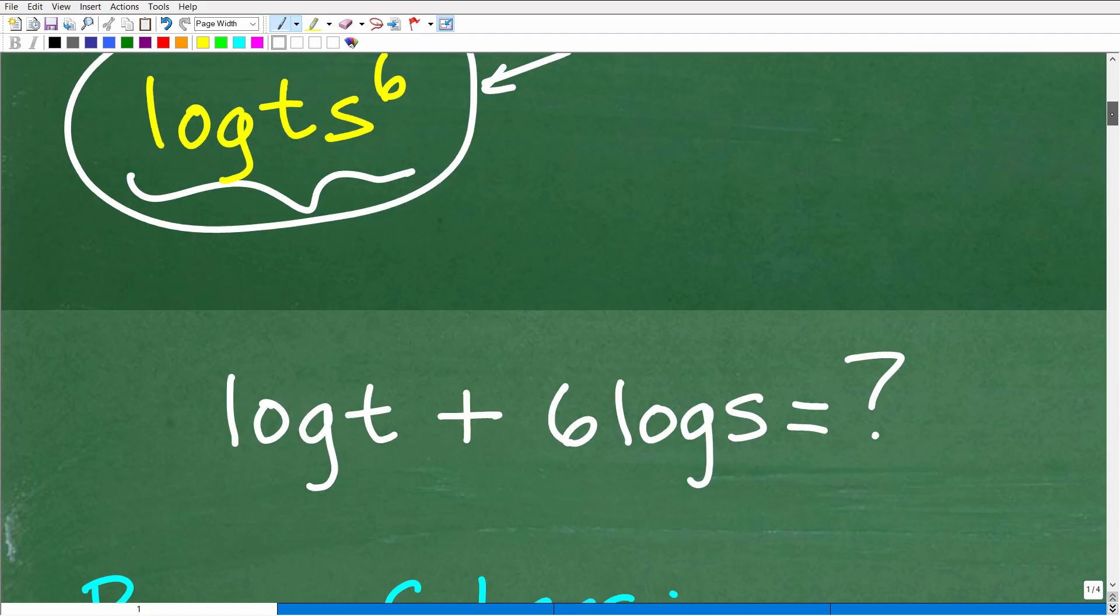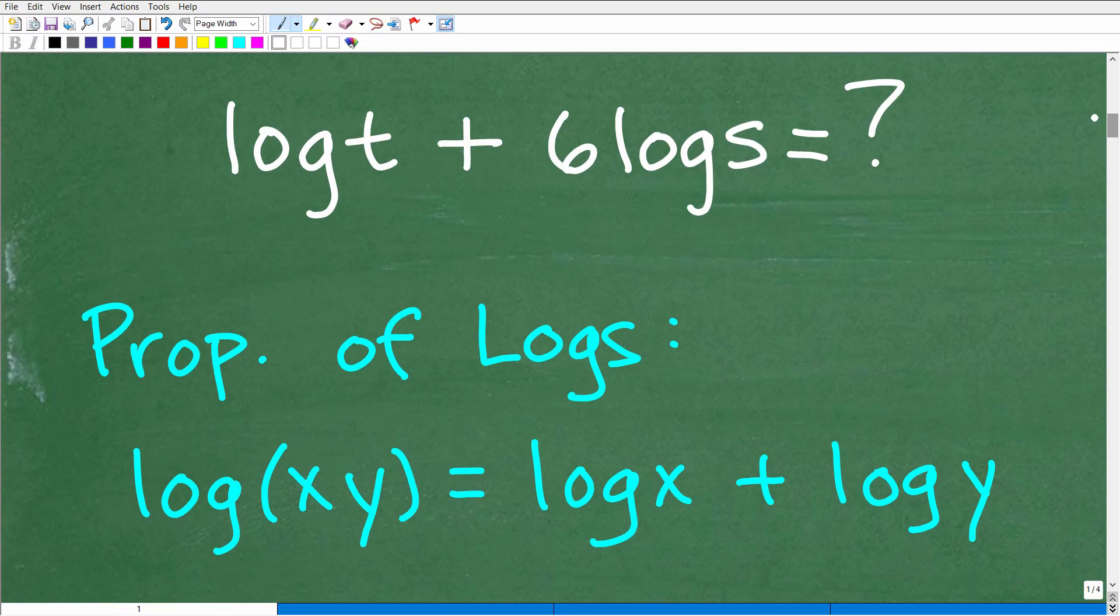So let's go and take a look at the problem here. I'm not going to cover all the properties of logarithms that you need to know. We're just going to take a look at the properties that we need for this particular problem. Here we have log t plus 6 log s. The first thing we want to observe is that both of these log expressions have the same base. We're dealing with the common logarithm, log base 10.